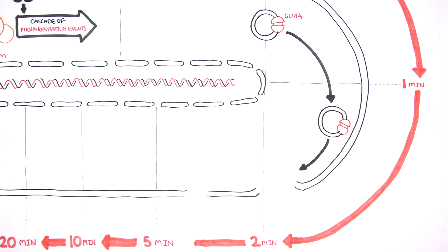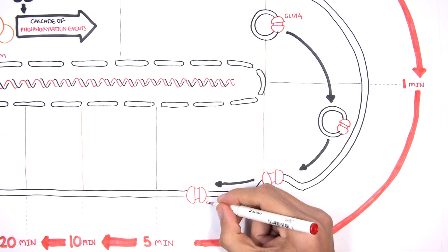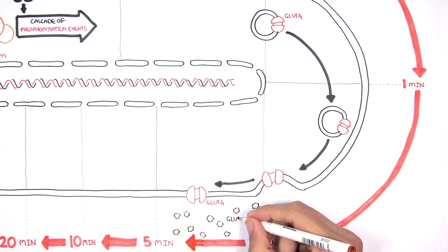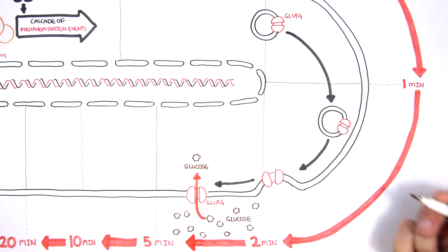By 5 minutes, GLUT4 is highly active on the plasma membrane. GLUT4 allows the high amounts of glucose outside the cell to move inside the cell.